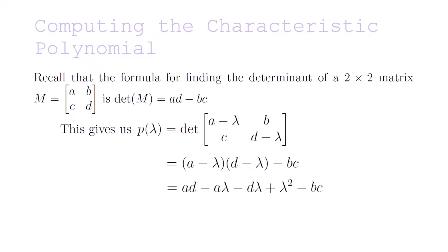When expanded, this gives us A·D minus A·lambda minus D·lambda plus lambda squared minus B·C. And this simplifies to lambda squared minus (A plus D) times lambda plus A·D minus B·C.